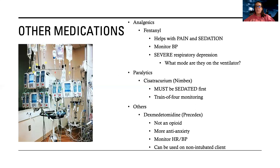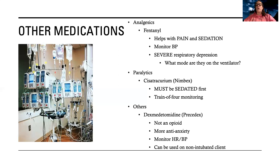Keep in mind: we're not going to paralyze someone without sedating them first. Think about how you would feel if you were completely paralyzed but could feel everything — that's what happens. No one could pay me enough, no doctor could convince me to give a paralytic without sedation first, because that is just cruel and unusual. You always give a sedative first — usually we'll push some Versed or fentanyl, or Ativan, morphine, something. They just need some sort of sedation first, and then they can get the paralytic. This comes as a drip and also as a push.